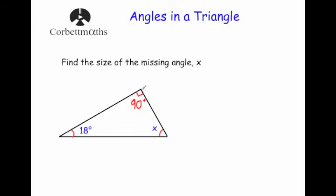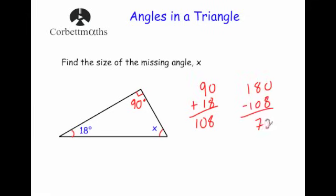These three angles will add together to be 180 degrees. To find the missing one, I'm going to add the two known angles and take that away from 180. So we do 90 plus 18, which gives us 108 degrees. Then 180 minus 108 gives us 72. So the missing angle X is equal to 72 degrees. We can check: 90 plus 18 is 108, plus 72 is 180. Confirmed.